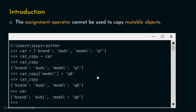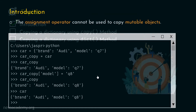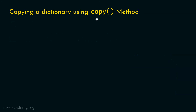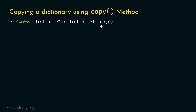Then what is the solution? We can copy mutable objects either by using the copy method or the dict method. Let's now learn how to copy a dictionary using the copy method. The syntax is: dict_name2 = dict_name1.copy(). dict_name1 refers to the dictionary whose copy we want to create, and dict_name2 refers to the dictionary where we want to copy the contents.